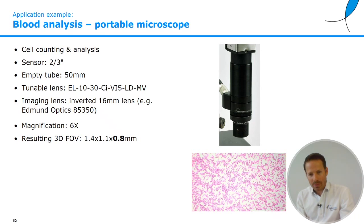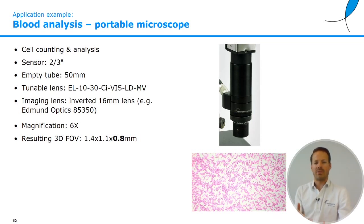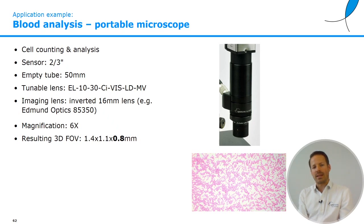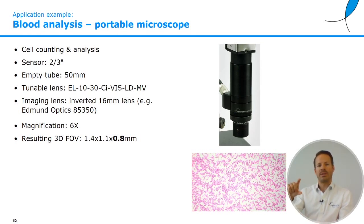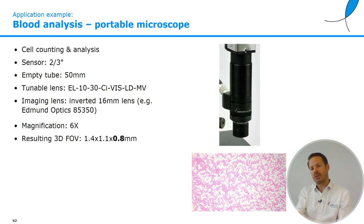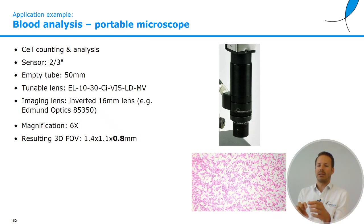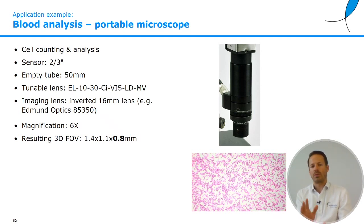The last example is a portable microscope. In a portable environment you really don't want a lot of mechanics, and the liquid lens is a very nice option for fast focusing in a compact lightweight system. Without zoom, at a fixed 6x magnification determined by the tube lengths used, the objective lens is an off-the-shelf lens from Edmund Optics used in reverse — where the image sensor would usually be, you place the object for inspection. Behind the S-mount lens you add an EL10-30 and an empty tube. This results in a 6x magnification, roughly 1.4mm field of view, and a Z range of about 0.8mm, allowing scanning through different layers of liquid to count particles or cells.